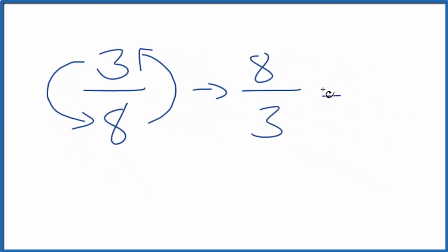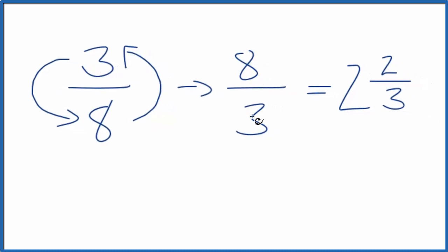Let's change it to a mixed fraction. 3 goes into 8 twice, 2 times 3 is 6, with 2 left over. So 2 and 2/3, that's the same fraction as 8/3.